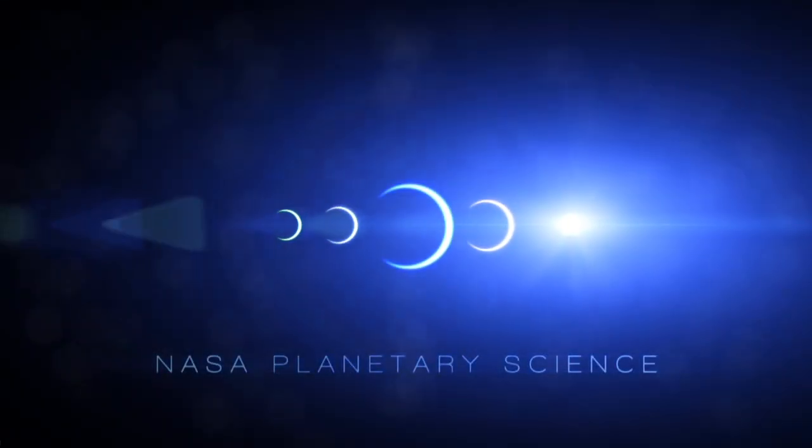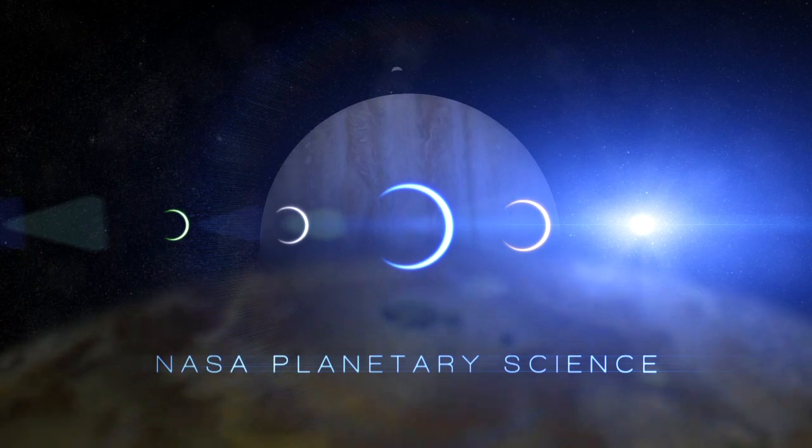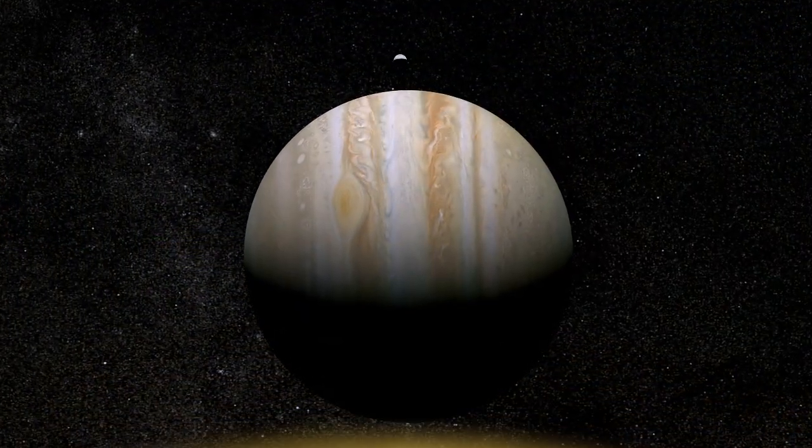My name is David Choi, and I study the weather on giant planets. When we look at Jupiter, we're seeing the top of its atmosphere and its weather layer.